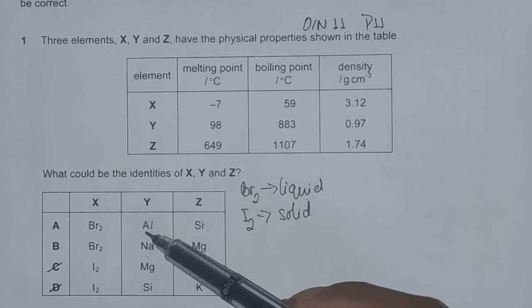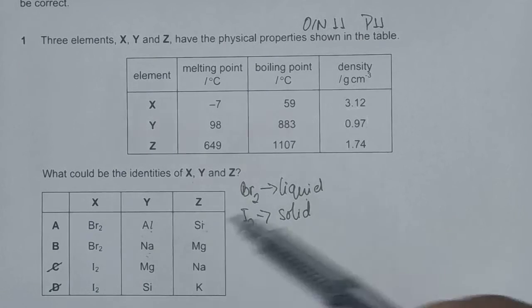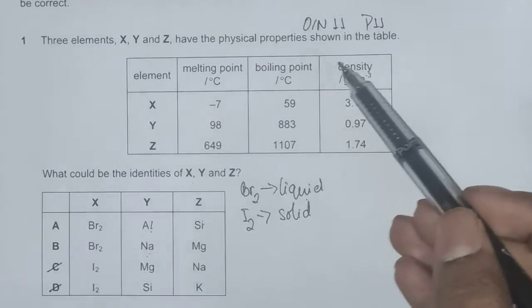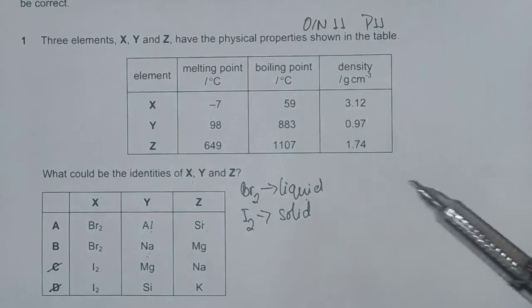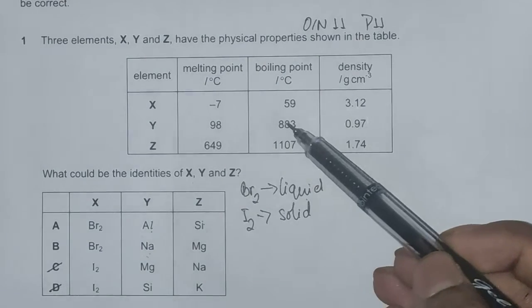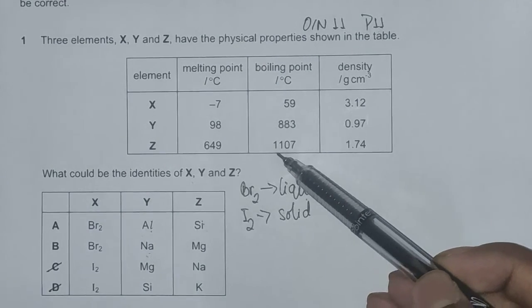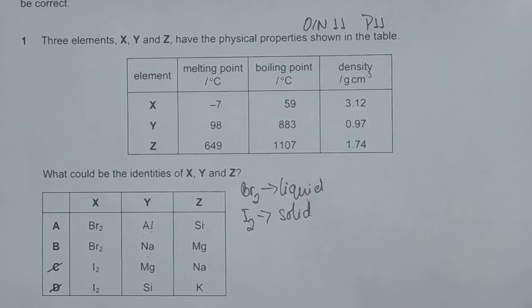Now for Y and Z, we've narrowed it down to aluminum and silicon, or sodium and magnesium. Again considering the melting point, boiling point, and density, we have been given 98 and 883 for Y, and 649 and 1107 for Z. But the density of Y is 0.97.